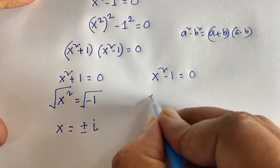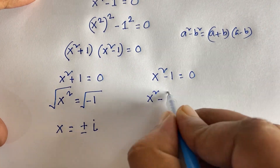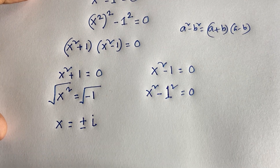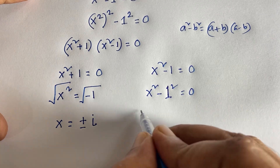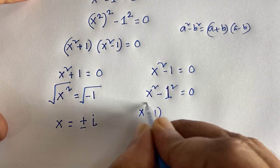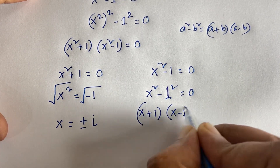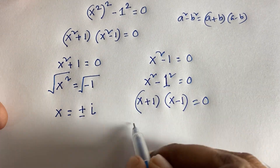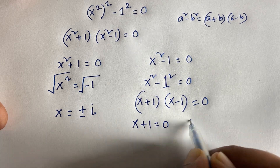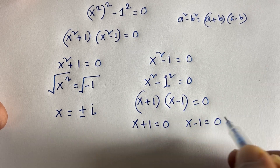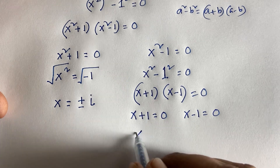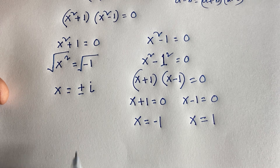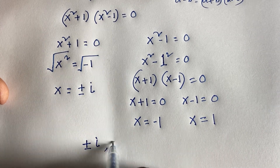For the second factor, x squared minus 1 equals 0. We apply the difference of squares again: (x plus 1)(x minus 1) equals 0. Setting each part to zero gives x plus 1 equals 0 and x minus 1 equals 0, so x equals negative 1 and x equals positive 1.